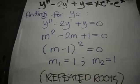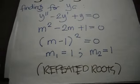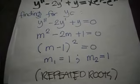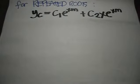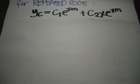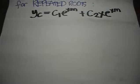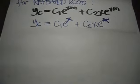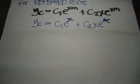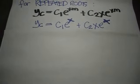So this is a case where there is repeated roots. For repeated roots we use this equation in getting yc: c1*e^(mx) + c2*x*e^(mx) where our m is equal to 1. So our yc now is c1*e^x + c2*x*e^x.